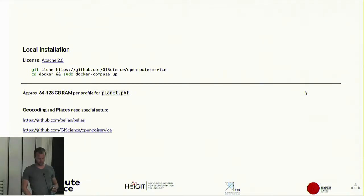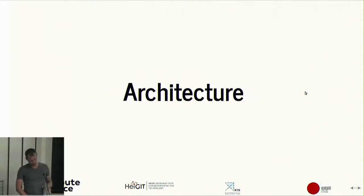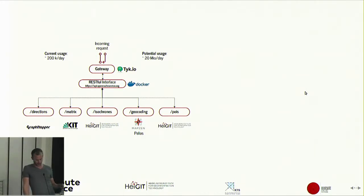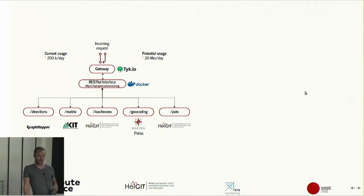Our architecture works like this: when we have an incoming request it will pass our gateway, which is also redundant — we have two servers acting as a gateway. That will decide if you're eligible: you provide an API key, it checks against our database, and if the key is valid the request will be forwarded to our REST interface. That REST interface is a setup of five different endpoints: directions, matrix, isochrones, geocoding, and POIs. The routing engine itself is GraphHopper.